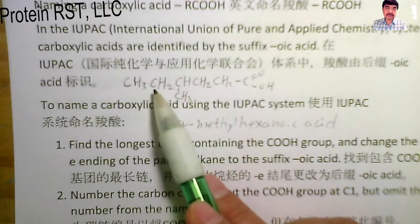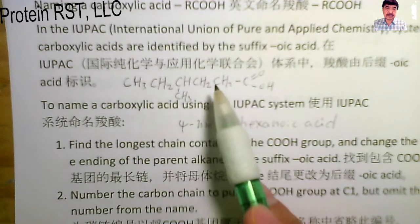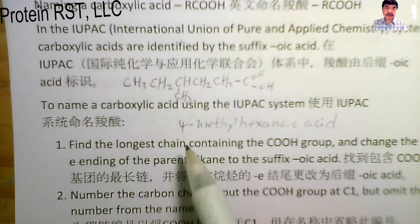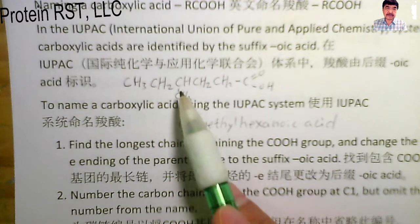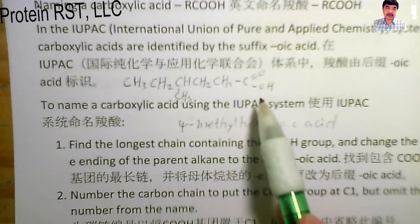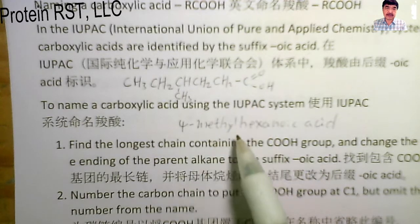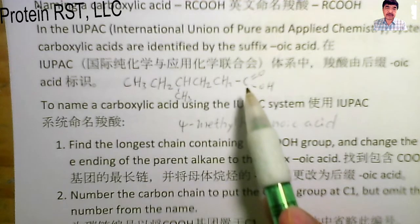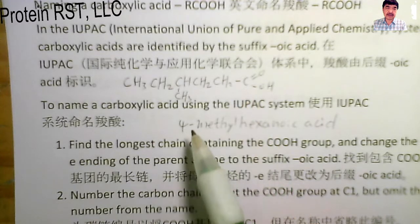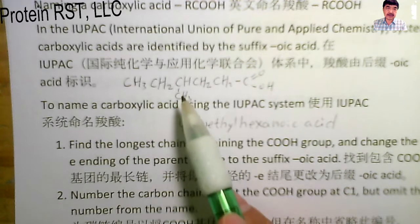Counting the carbons: one, two, three, four, five, six. At the C4 position there is a methyl group. The carboxylic carbon is C1, but when you name this compound you don't need to write the '1' — this position is omitted. The only location needed to identify is C4, because that's where the methyl group is.